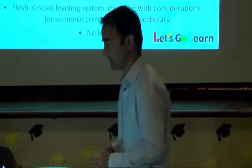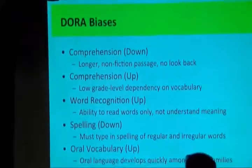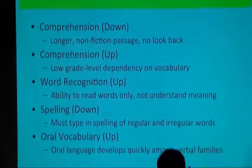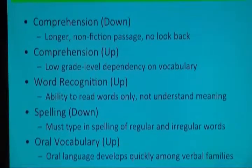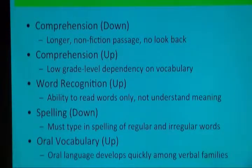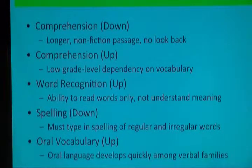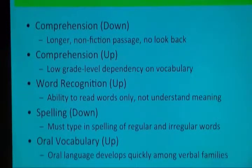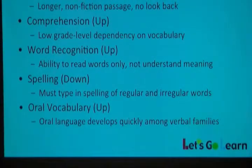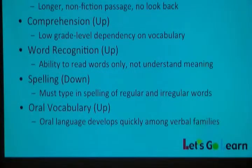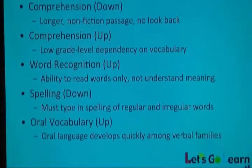We have your data for your school and district. Some things to keep in mind about DORA biases: comprehension, because of longer non-fiction passages and no look-back, scores can be pushed a little lower. Word recognition — by 4th, 5th, 6th grade it'll shoot up. Spelling tends to be lower because overall, spelling is becoming a lost skill. Oral vocabulary among young students shoots up early, then levels off and ends up lower as they get older.